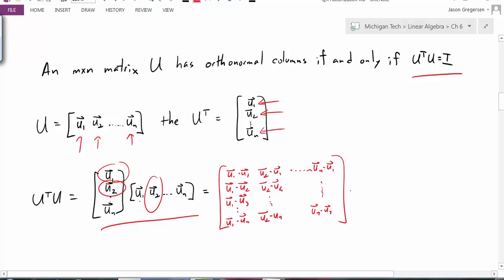This is what our giant matrix would look like. But now if we think about these columns, they are orthonormal, which means if I take U2 dot U1, that result would be 0. In fact, any of these dot products between different columns of our matrix U would also be 0. All these would be 0.